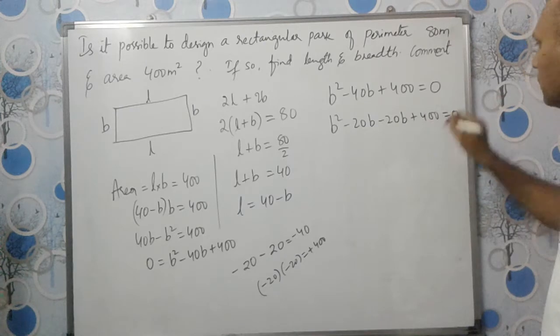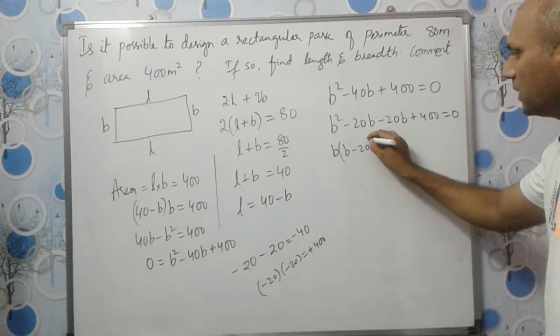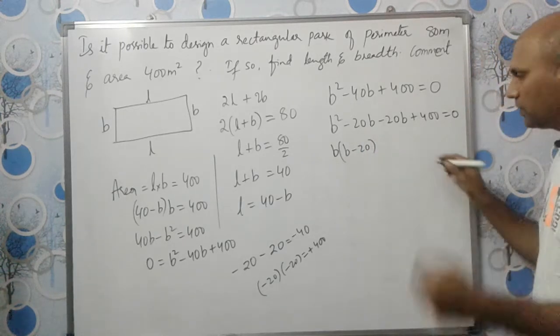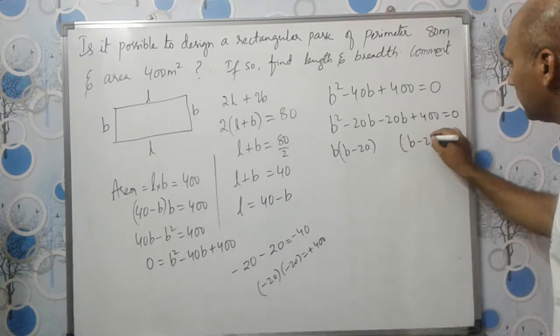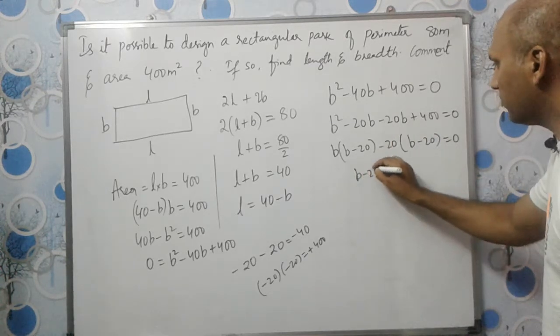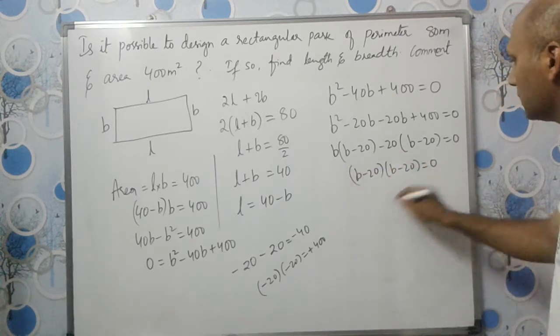What can we take common? B we can take common, giving us B(B-20). Whatever we get inside the brackets, we should write it one more time. So we have (B-20)(B-20)=0.